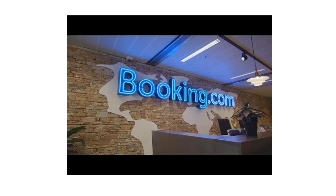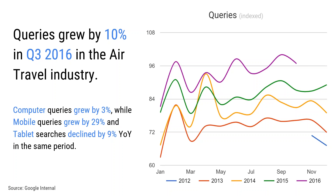Booking.com saw the opportunity in mobile and made their marketing strategy around it. We're seeing the same thing at Google. Looking at industry trends — I'll divide it up into air, cruises, and accommodation. Across all sectors, queries are growing year on year and this is significantly driven by mobile. Looking at the graph, from 2013 in red at the bottom to 2016 in purple at the top, we see year-over-year increase in query volume, with almost 30% of it driven by mobile growth. Mobile is driving the growth across the industry.